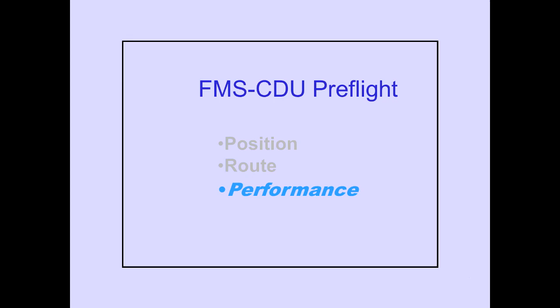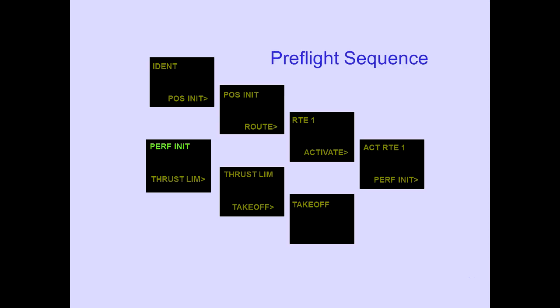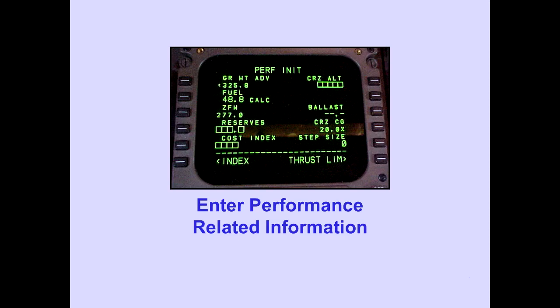In this part of the FMS-CDU Pre-Flight, we will cover performance information. The pre-flight sequence continues on the Performance Initialization page. The Performance Initialization, or PERF-INIT, page is used to enter performance-related information.